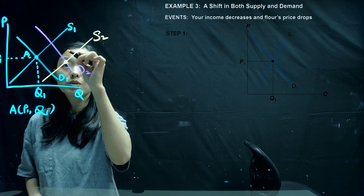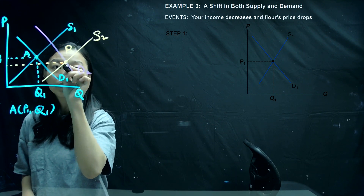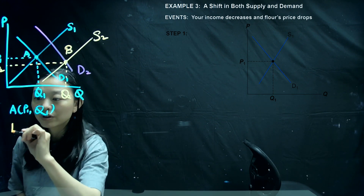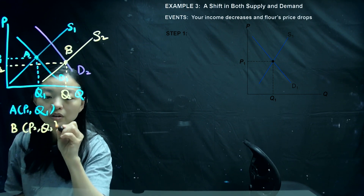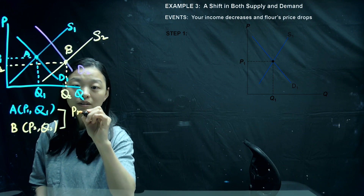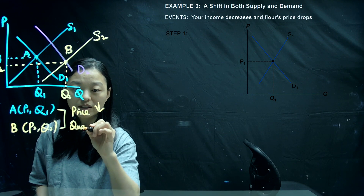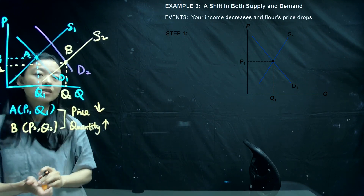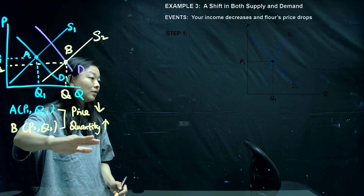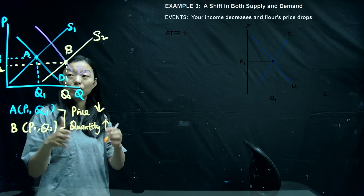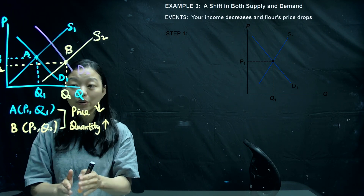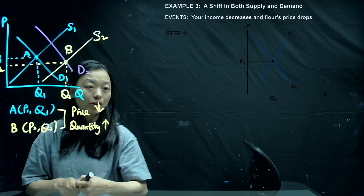These two events shift the demand curve and supply curve at the same time, resulting in a new equilibrium point B with P2 and Q2. You might conclude that price decreases and quantity increases — but when the demand curve and supply curve shift at the same time, you should be very careful about the result.